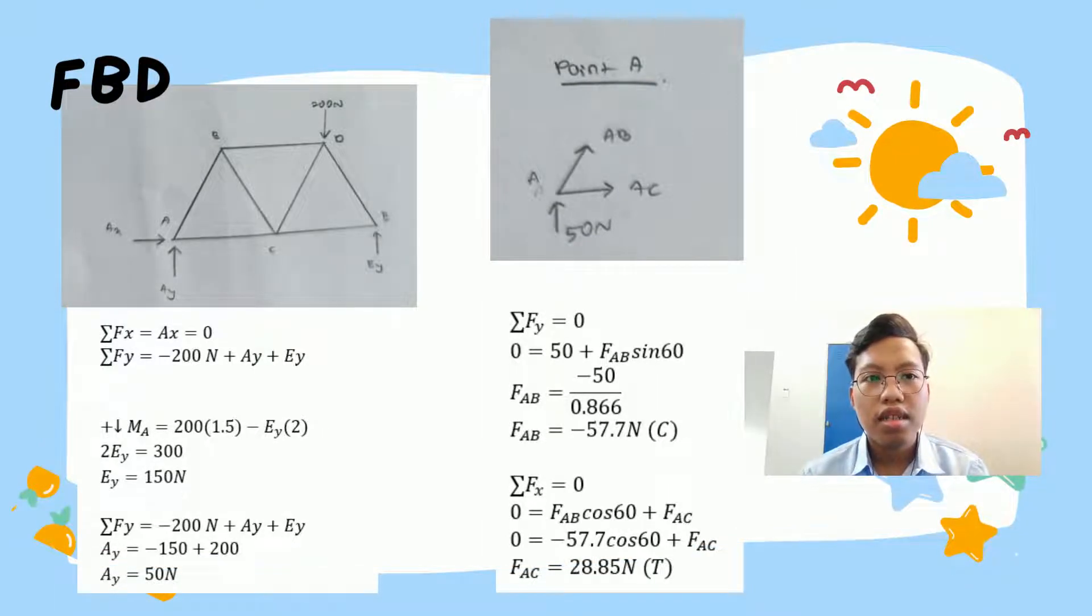First we will draw the FBD. The FBD has been drawn and what we see at point A, we will have AX and AY. And at point E, we have EY. From the FBD, we calculate sum of FX and sum of FY. Sum of FX equals AX equals zero. Sum of FY equals negative 200 N plus AY plus EY.